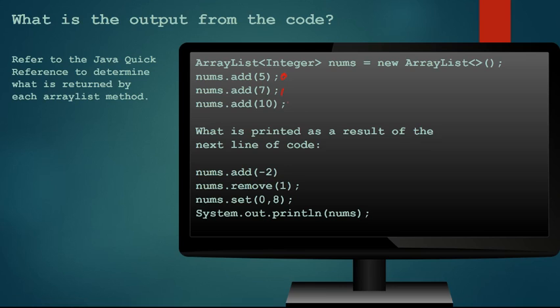And we see 0, 1, 2, 3. We remove what's at element 1 and renumber the array and now we're going to set index 0 to hold 8 and we see the array list is inside of the println method, it's going to print the array list and if we recall array lists have a toString method defined to print a square bracket and then each of the elements so we have 8, 10, and negative 2 and that is what it's going to print out.